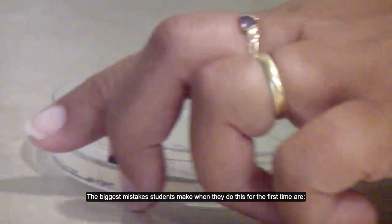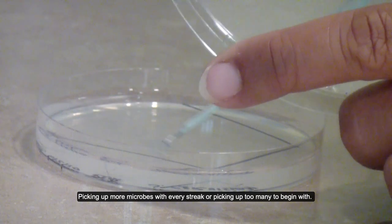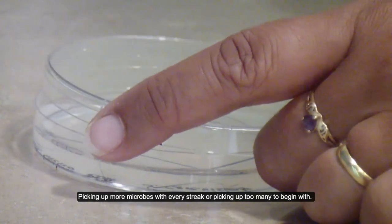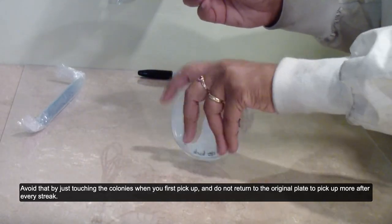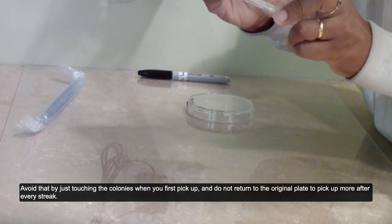The biggest mistakes students make when they do this for the first time are picking up more microbes with every streak or picking up too many to begin with. Avoid that by just touching the colonies when you first pick up and do not return to the original plate to pick up more after every streak.